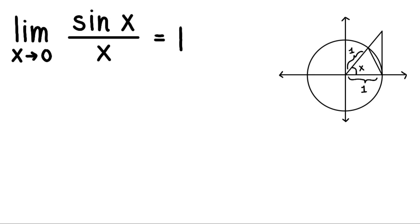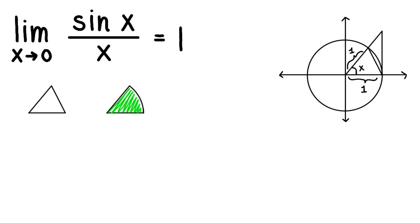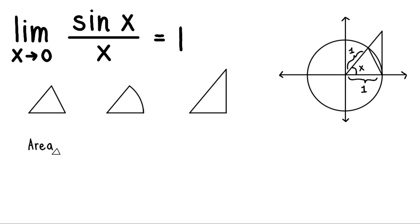Let's take apart this figure and get three regions: first, the small triangle; then the sector of the circle; and then the big triangle. Take note that the area of the first triangle is less than or equal to the area of the sector, and the area of the sector is less than or equal to the area of the bigger triangle.